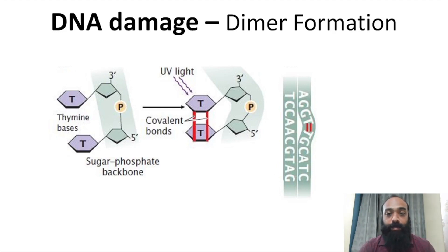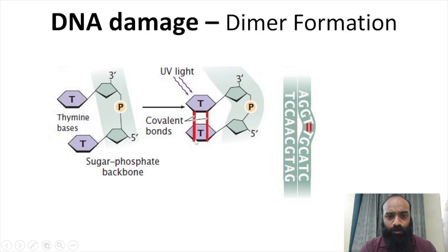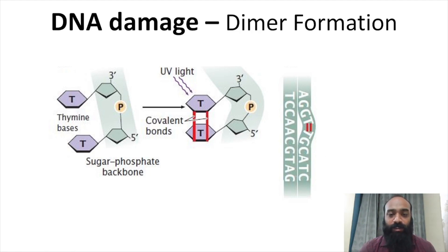The next type of DNA damage is dimer formation, which occurs especially in the presence of UV light from sunlight or from electronic applications like a laminar flow hood with UV on. UV light causes covalent bonds to form between successive thymine or pyrimidine bases, bringing them very close together and creating a distortion or kink in a single strand of DNA. This structural distortion makes the DNA unstable and can lead to problems in both replication and transcription.